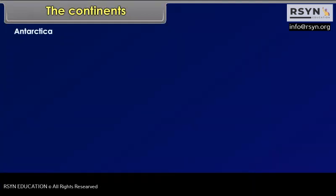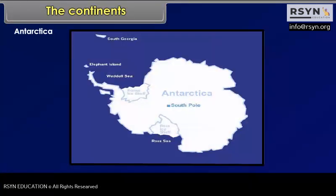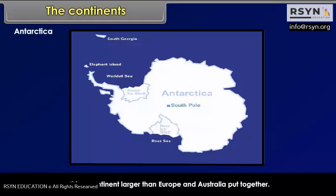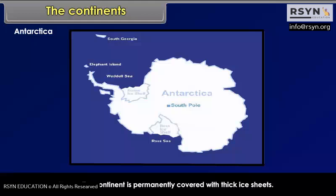Antarctica is completely in the southern hemisphere. It is a continent larger than Europe and Australia put together. The South Pole lies almost at the centre of this continent. Hence, the continent is permanently covered with thick ice sheets. It has no permanent human settlements.